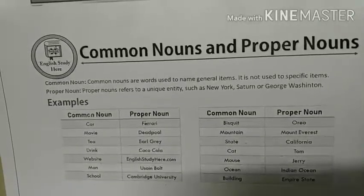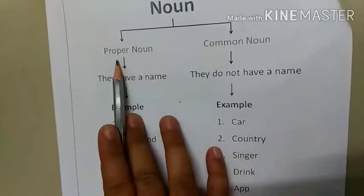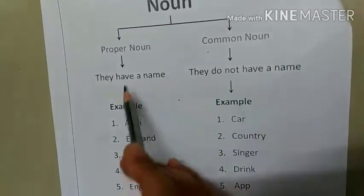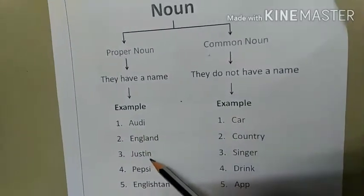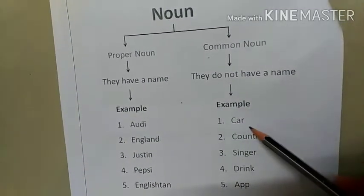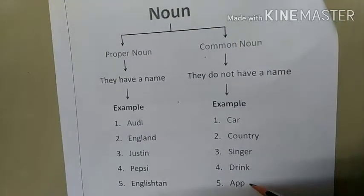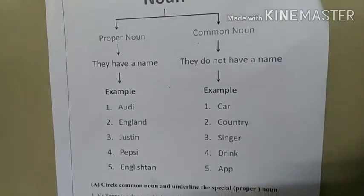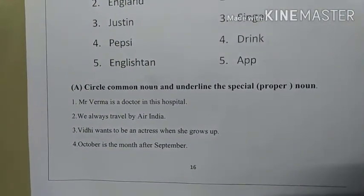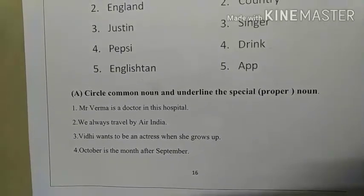Now turn the page and come to page number 16. Here proper nouns have a specific name and common nouns do not. Examples of proper nouns: Audi, England, Justin, Pepsi, English10. Examples of common nouns: car, country, singer, drink, and app. Now come to the exercise portion — circle the common nouns and underline the proper nouns, which are called spatial nouns here. So let's get started with the exercise portion. Take out your pencil.